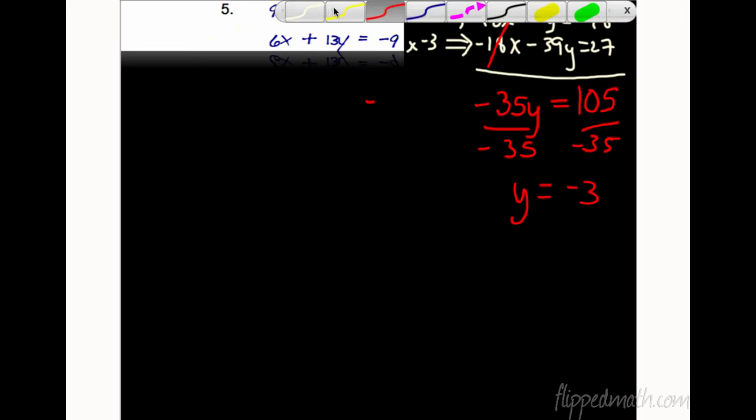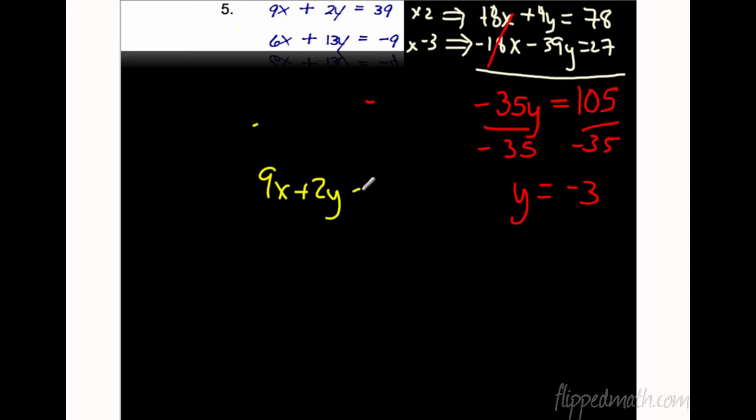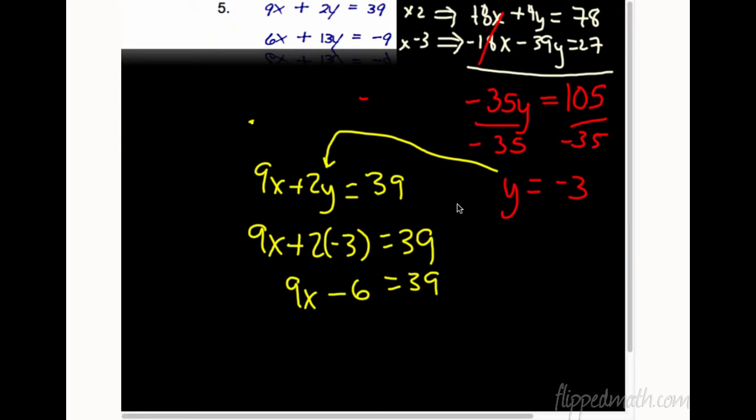So now we're going to go back to one of the first equations, either one. So I'm going to pick the top one. Top one is 9X plus 2Y equals 39. Again, it doesn't matter which one you pick. Eeny, meeny, miny, moe it if you're not sure. We're going to plug in a negative 3 for Y. So that's going to go right here where the Y is. So 9X plus 2 times negative 3 has to equal 39. So what do we get here? 9X minus 6 equals 39. Okay, so now what are we going to do? Let's see. Add 6 to both sides. So we get 9X equals 45. Divide by 9. You get X equals 5. So answer to this one, 5 negative 3.